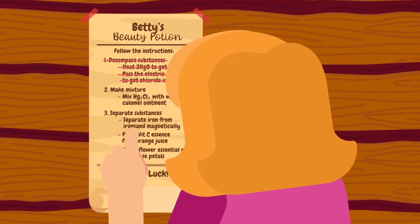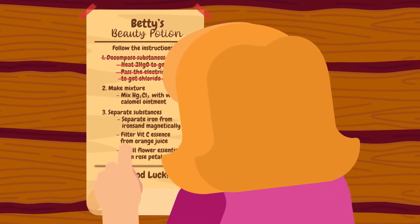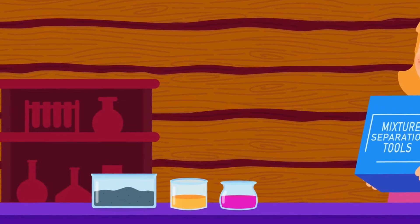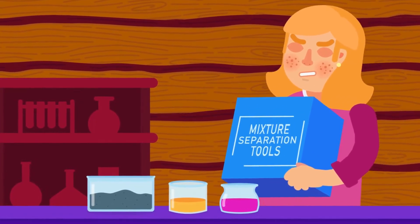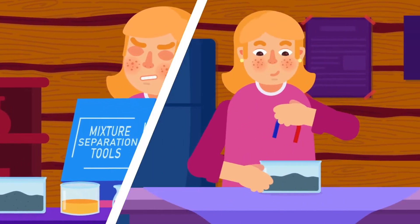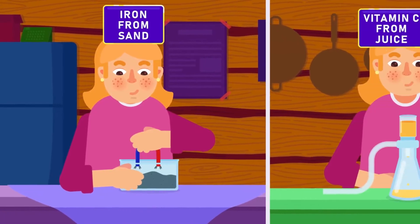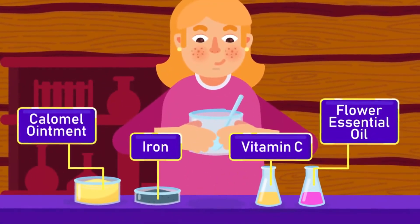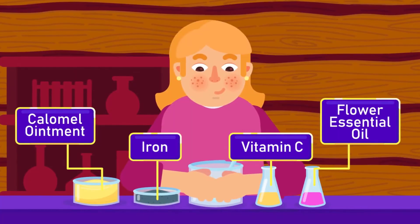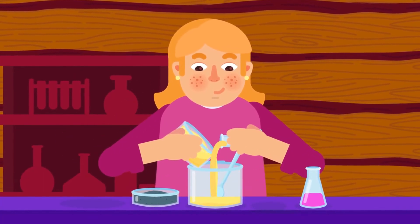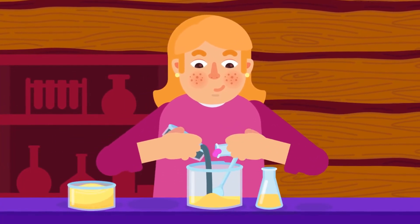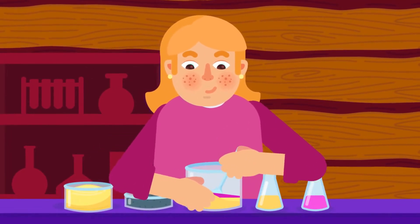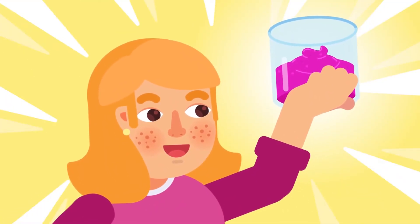Some characteristics of mixtures are as follows. A mixture can be separated into its original components by using three physical methods, such as magnetic separation, filtration, or distillation. The chemical properties of a mixture are the same as those of its components. No chemical reaction takes place when a mixture is formed.